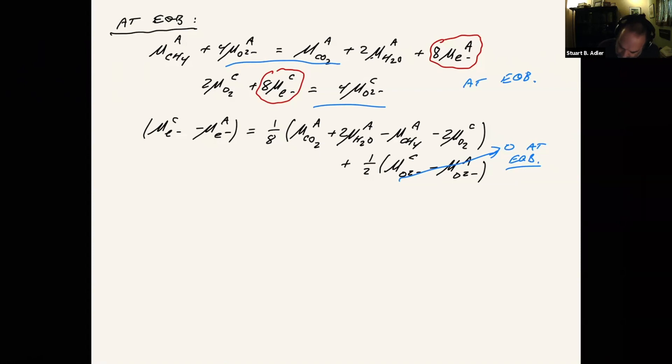And then we also talked last time about the relationship between potential that you measure with a voltmeter in volts versus chemical potential electrons. And the relationship is minus times the negative times Faraday's constant. So putting that together, we would have that minus F, phi cathode minus phi anode. And this is what I'm going to call the voltage. This is one eighth, excuse me, one eighth times this first term mu CO2 plus mu H2O minus mu CH4 minus two mu O2.